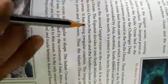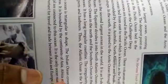It is surrounded by Asia, Australia, and North America. The Pacific Ocean is nearly circular in shape.